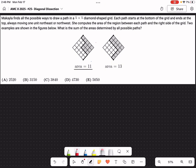Makayla finds all the possible ways to draw a path in a 5 by 5 diamond shaped grid, like the one shown here. Each path starts at the bottom of the grid, right there, and ends at the top, right here.